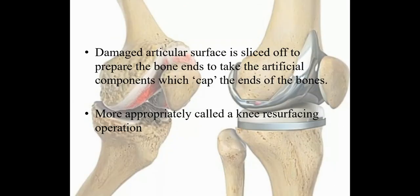In total knee replacement, the damaged articular surface is sliced off to prepare the bone ends to take the artificial component — more appropriately called a knee resurfacing operation. The surgeon removes the affected portion, the damaged portion which has osteoarthritic degenerative changes, and an implant is put in place.